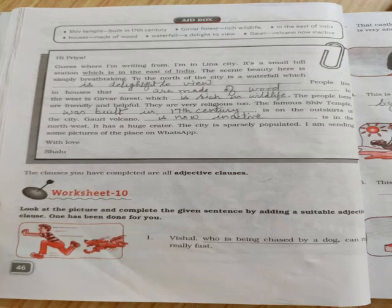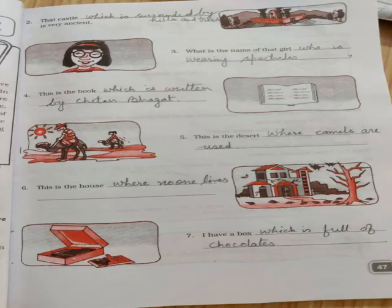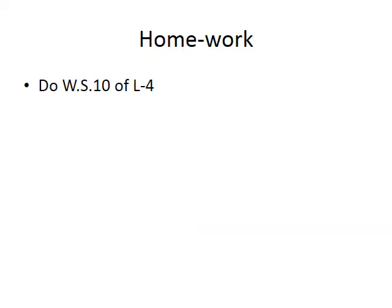Now, worksheet 10 — you will do this yourself. The first one is done for you: 'Vishal, who is being chased by a dog, can run really fast.' Here, 'who is being chased by a dog' is the adjective clause. Your homework is to complete worksheet 10 of this lesson. Thank you.